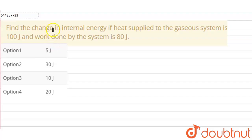Hello everyone, so our question is: find the change in the internal energy if heat supplied to the gaseous system is 100 joules and the work done by the system is 80 joules.